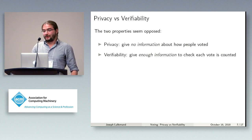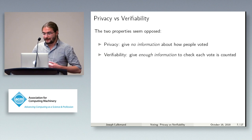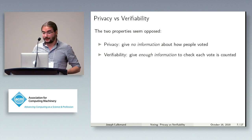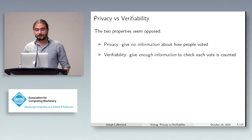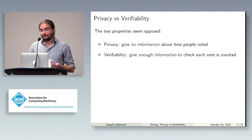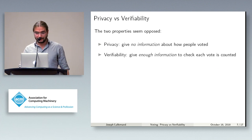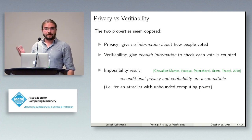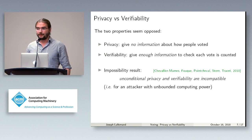On the contrary, if you really want to be verifiable, you might have everyone send their votes in clear and unencrypted — then it's very verifiable, because anyone can compute the result and check it is correct. But of course, it's not private at all. In general, the two properties really seem opposed: the more you try to have one, the harder it gets to have the other. In fact, there is even a theoretical result stating that unconditional privacy is incompatible with verifiability.